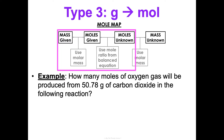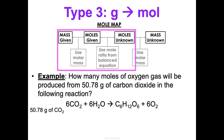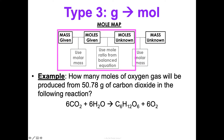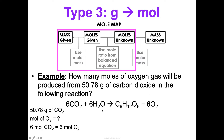How many moles of oxygen gas will be produced from 50.78 grams of carbon dioxide in the following reaction? What do we know? We know 50.78 grams of carbon dioxide. What do we want to know? We want to know moles of oxygen gas. We need a molar mass and the mole ratio from the balanced equation. The mole ratio of oxygen to carbon dioxide is six to six. We're also going to need the molar mass of carbon dioxide since we're starting with mass and going to moles of carbon dioxide.